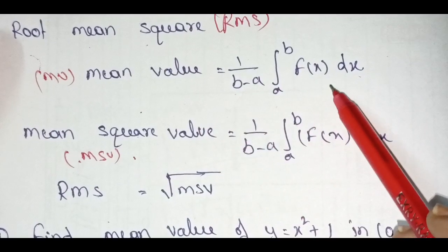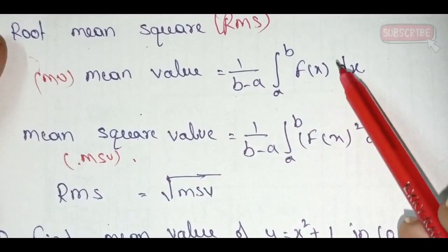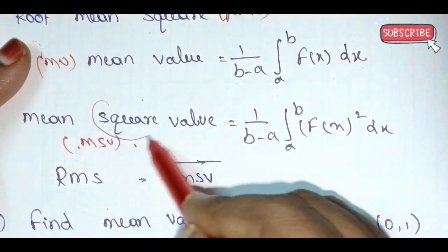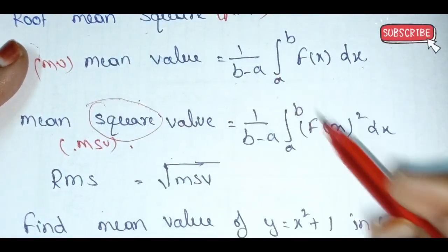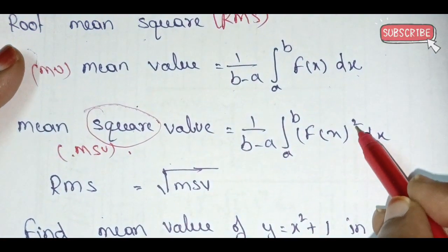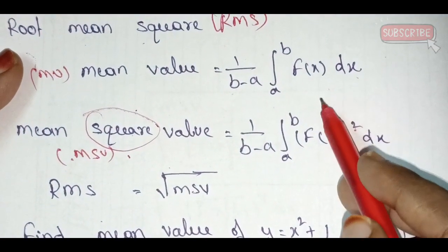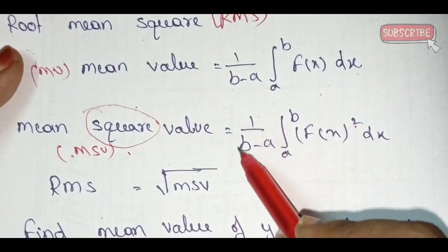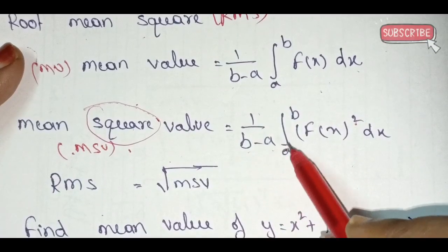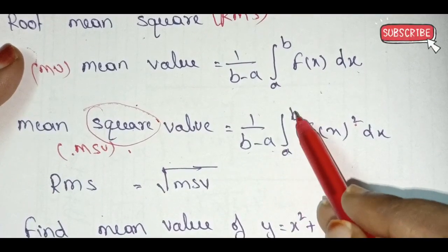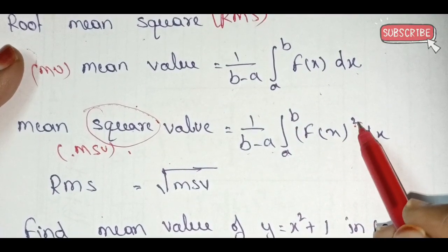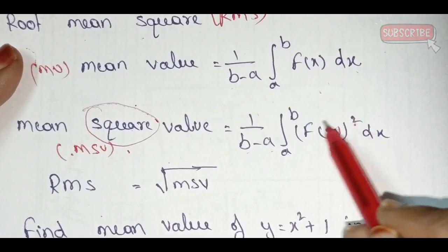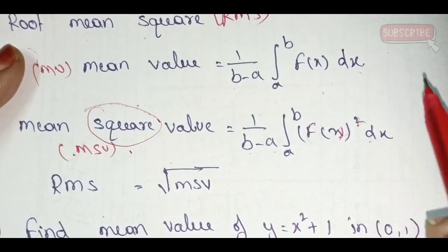Okay, we will find the mean value. The mean square value formula is: 1 by (b minus a), integral from a to b of [f(x)]² dx.